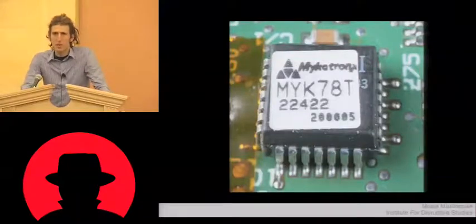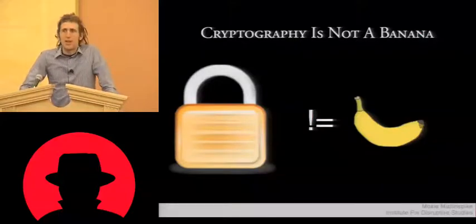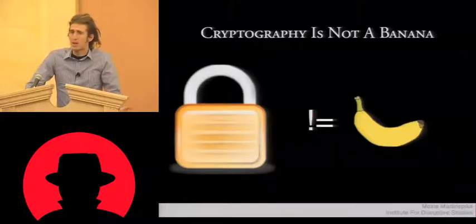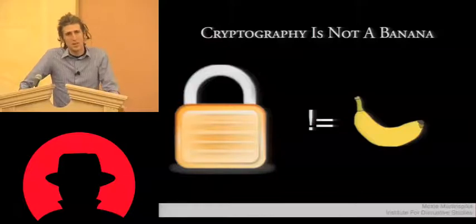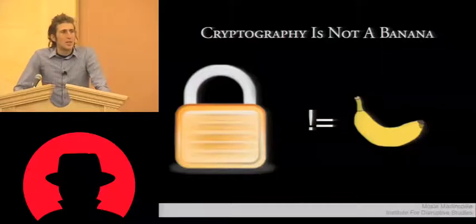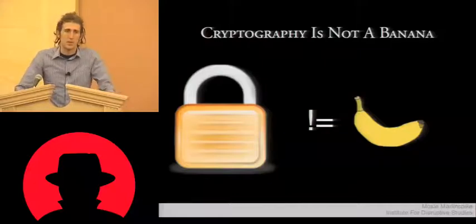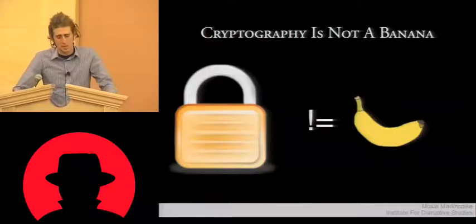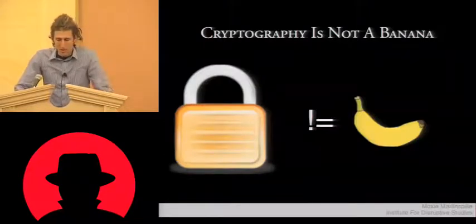And so their problem was that cryptography is not a banana. Which is to say that it is difficult to treat information as an object. If I have a banana and I share it with one person, there is still only one banana in the world. If they share it with another person, there is still only one banana in the world. However, if I share an idea with somebody or information with somebody, then now there are two copies and each time somebody shares something, there is the potential for an exponential explosion.